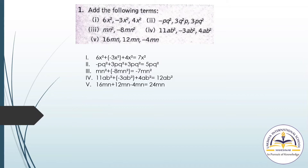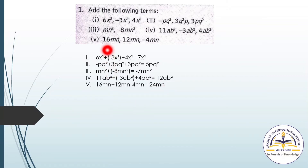Next, mn² and −8mn². So −8 plus 1 is −7, giving −7mn². Now 11 minus 3 is 8, 8 plus 4 is 12, giving 12ab². Then 6 plus 12 is 18, wait, that gives 28 minus 4 equals 24. So 24mn.